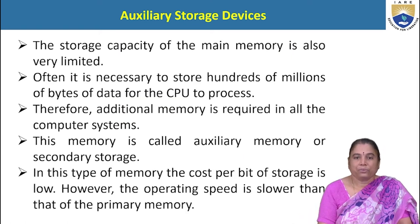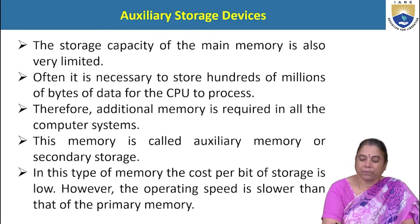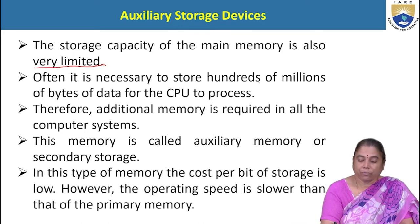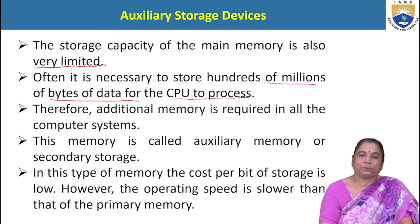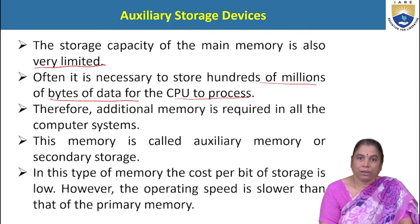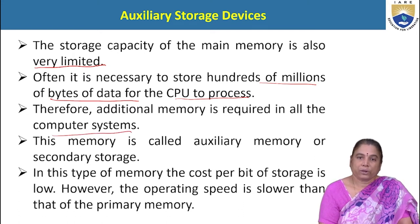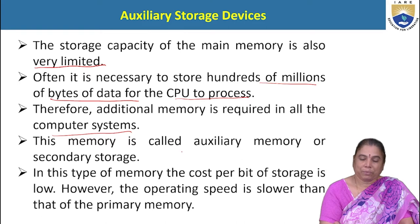What is auxiliary memory? The storage capacity of main memory is very limited, so it is necessary to store hundreds of millions of bytes of data for the CPU to process and execute user programs. User programs can be of large size; therefore, additional memory is required for the computer system. To extend the internal storage capacity of the computer, auxiliary memory is used — that is why this memory is called auxiliary memory or secondary storage.